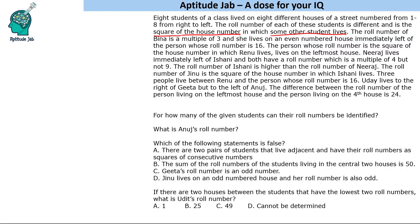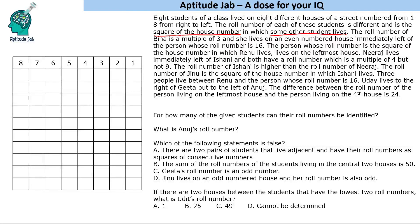Certain conditions are given, and we'll build a table. We may get multiple cases, so I've drawn a bigger table. Looking at the statements — is there anything giving a fixed position? It says the person whose roll number is the square of the house number in which Renu lives, lives on the leftmost house. So the leftmost person's house number is the square of Renu's house number. Another statement: the difference between the roll number of the person on the leftmost house and the person on the fourth house is 24.